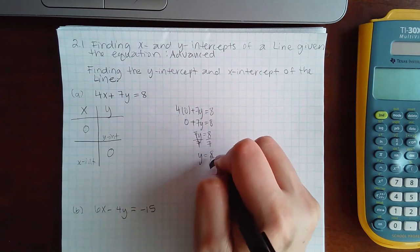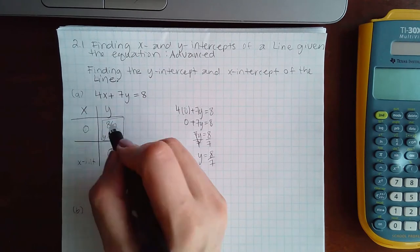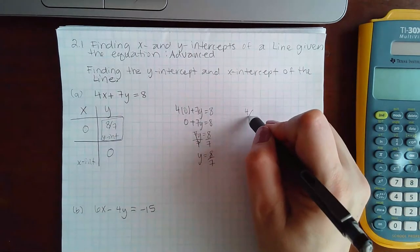And if I divide both sides by seven, I get eight sevenths. So the y intercept is eight sevenths.